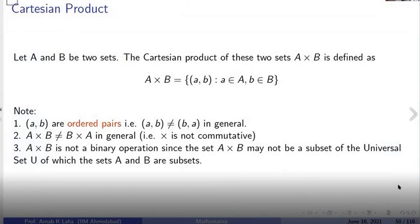Here we have two sets, A and B. We are talking about A cross B. So A cross B is the Cartesian product of two sets, A and B. So what I have is a collection of ordered pairs.